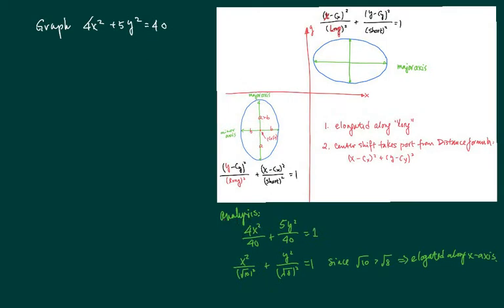So let's do a quick analysis. We're going to divide it by 40 on both sides to normalize, so we're going to get into the standardized form. And since the radical 10 or square root of 10, on the bottom we're going to get 10. I just expressed it into the square form. Since square root of 10 is bigger than square root of 8, it's going to be elongated x-axis.